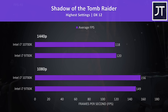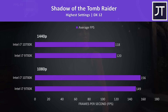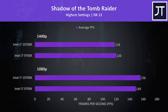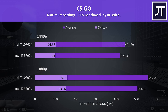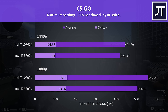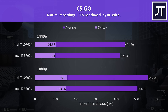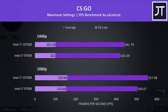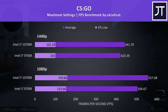Shadow of the Tomb Raider was tested with the game's benchmark tool. Although the 10700K was 5% faster at 1080p, strangely it was slightly behind at 1440p — just a couple of FPS difference, but the results were consistent. CS:GO was tested using the Ulletical FPS benchmark, and this game saw the largest improvement out of all 12 titles. At 1080p the 10700K was around 10% faster in average FPS, and 5% faster at 1440p, with far smaller differences noted in the 1% lows.